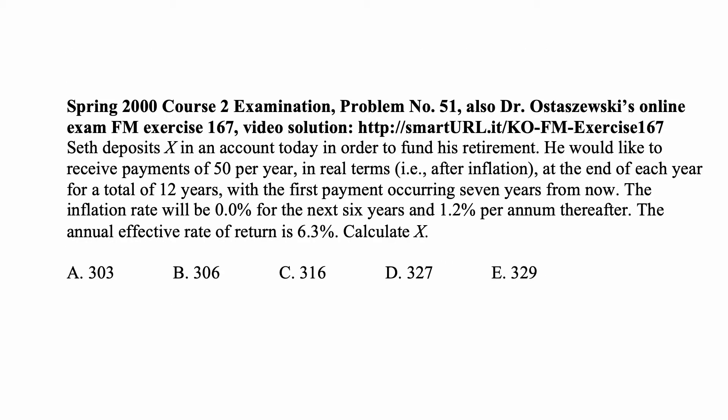Here is a problem for today for exam FM on financial mathematics. Seth deposits X in an account today in order to fund his retirement. He would like to receive payments of 50 per year in real terms — that is, after inflation — at the end of each year for a total of 12 years, with the first payment occurring 7 years from now. The inflation rate will be 0.0% for the next 6 years and 1.2% per annum thereafter. The annual effective rate of return is 6.3%. Calculate X.